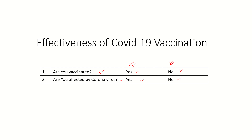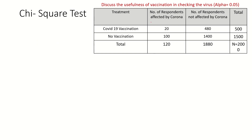This is the COVID-19 vaccination treatment table. People who took vaccinations: only 20 of them were affected by corona after vaccination. People who were vaccinated and not affected by corona: that number is 480. People who were not vaccinated: their total is 1500, and those not vaccinated but affected by corona number 1400.